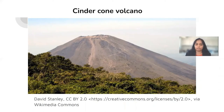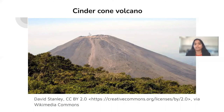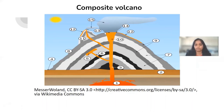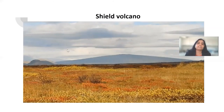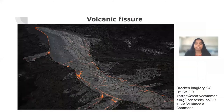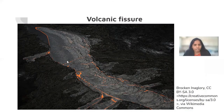This is a cinder cone volcano — it has just one mouth, a single crater. This is a composite volcano — it has this one mouth, another mouth, and there could be more mouths, so multiple mouths. This is a shield volcano — as you can see, the slopes are not very steep and the elevation is never more than 35 degrees. Lava flows out really smoothly without pressure. This is a volcanic fissure — as you can see, the two plates are diverging and the lava is coming out very smoothly from this crack.